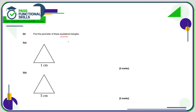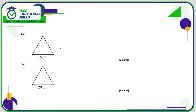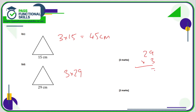These are equilateral triangles, meaning every side length is the same. So it's 3 times 1, which is 3 centimetres. 3 times 5, which is 15 centimetres. 3 multiplied by 15, which is 45 centimetres. And 3 multiplied by 29 — let's do some long multiplication: 3 nines are 27, carry 2; 2 threes are 6, plus 2 is 8, so that's 87 centimetres.